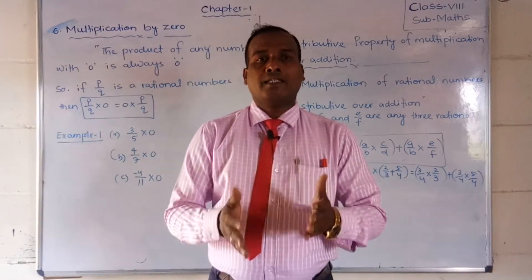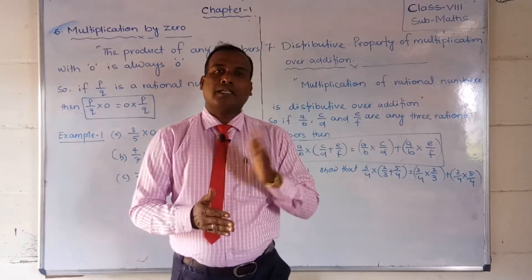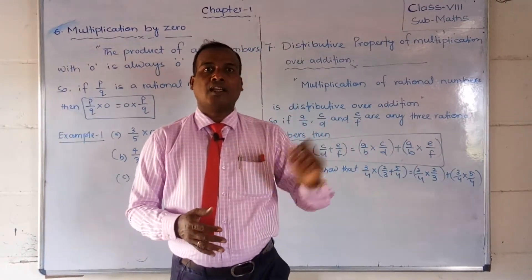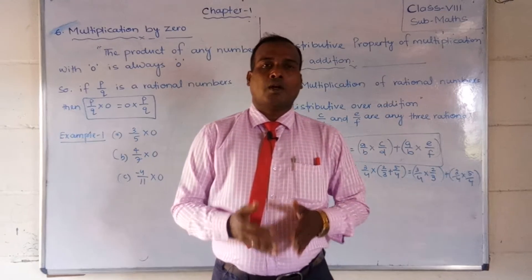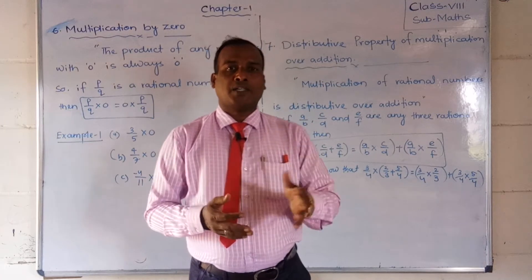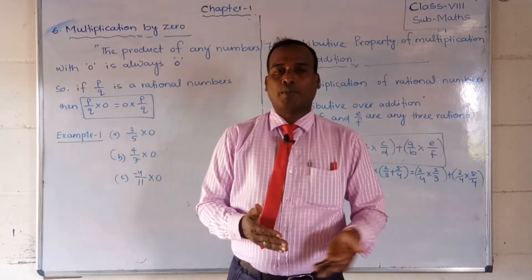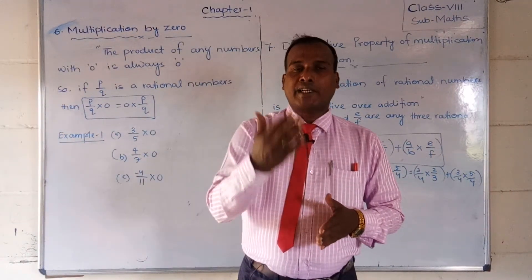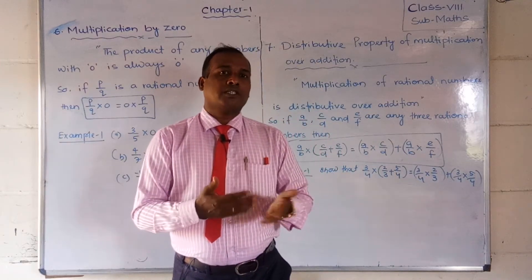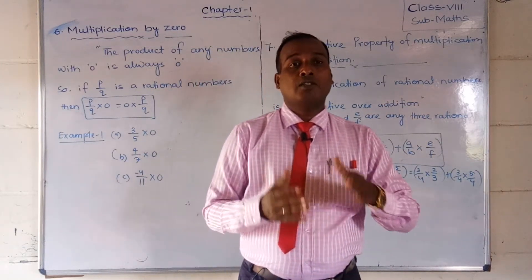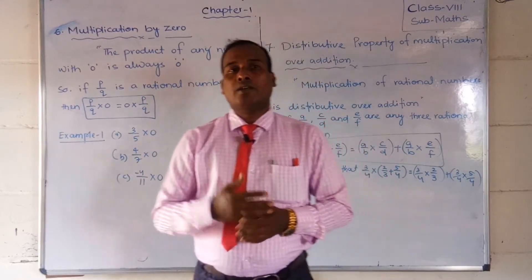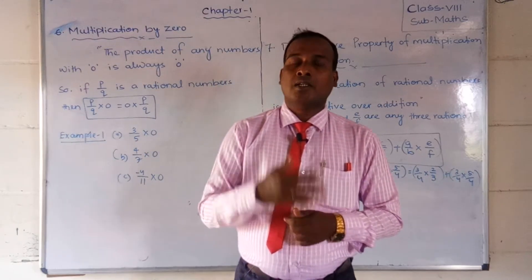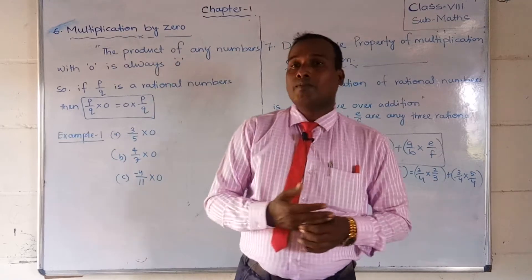Hello students, good morning and welcome back to our online class for 8th standard students. Today we are going to continue our first chapter on rational numbers. In the previous video, you learned about the properties of multiplication of rational numbers — closure property, commutative property, associative property, extension of multiplicative identity, and multiplicative inverse. Today we are going to discuss some additional properties of multiplication of rational numbers, starting with multiplication by zero.